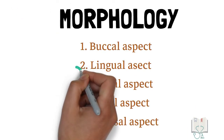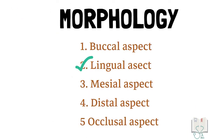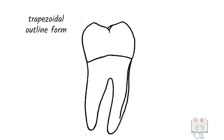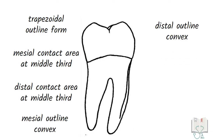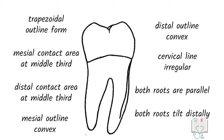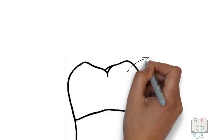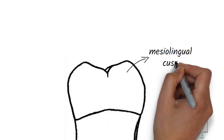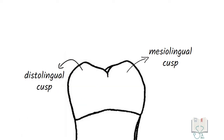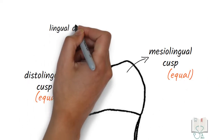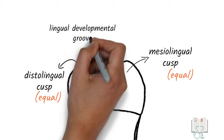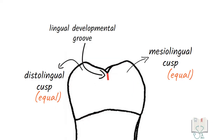Next, the lingual aspect. All features of the outline form from the lingual aspect are the same as in the buccal aspect. Moreover, both lingual cusps — mesolingual and distolingual — are seen and are of equal size. A lingual developmental groove is seen running between the lingual cusps.